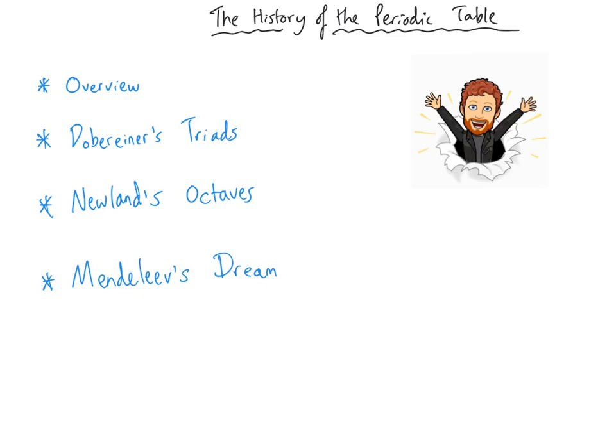Hello and welcome to this GCSE chemistry video about the history of the periodic table. In this short video we're going to take a look at a timeline of how our ideas about the periodic table have changed over the last several thousand years. Then we're going to move on to look at the three most important scientists considered during GCSE chemistry: Döbereiner and his triads, Newlands and his Law of Octaves, and Mendeleev and his periodic table that apparently came to him in a dream.